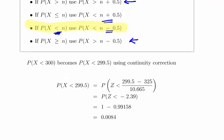It becomes a very straightforward question then. Essentially, the probability of X less than 300 becomes the probability of X less than 299.5 when we are looking at it from the point of view of the normal distribution. So we subtract 0.5.